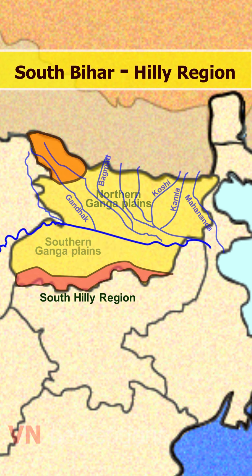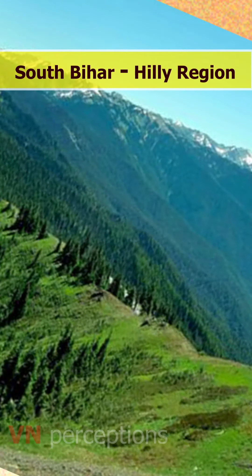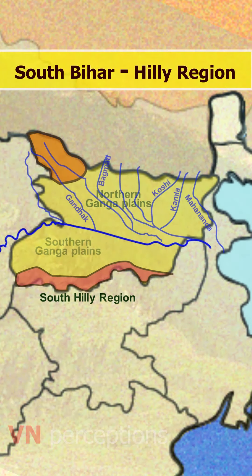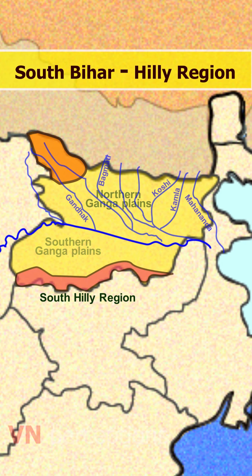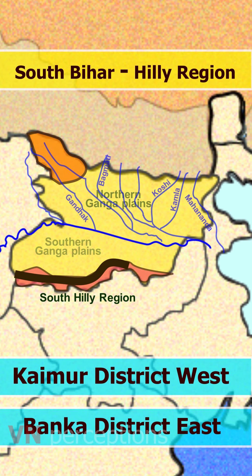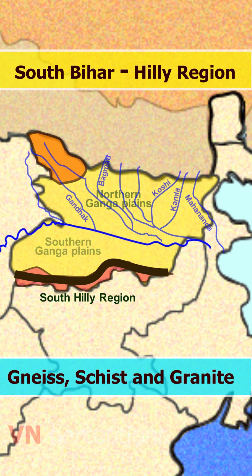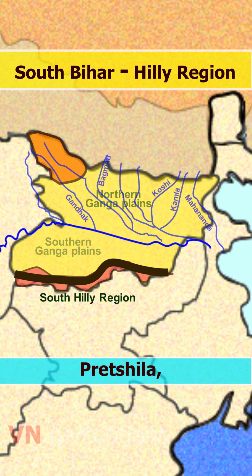Coming to the south hilly region of Bihar, this is again marked by hills and ridges. Ridges are long, pointed, narrow hills with many peaks. Geographically, it extends from the Kaimur district in the west to Banka district in the east. This region is made up of hard rocks of gneiss, schist and granite. The important hills in this region are Pretshila, Jethyan, Ramshila and many more.